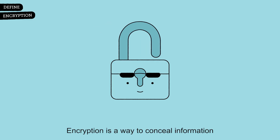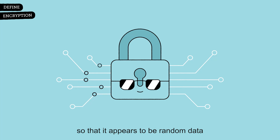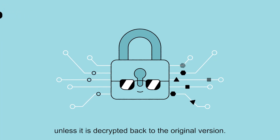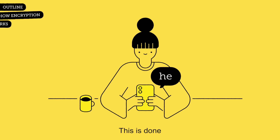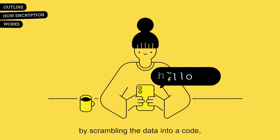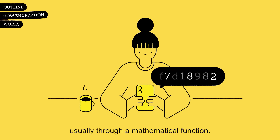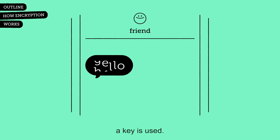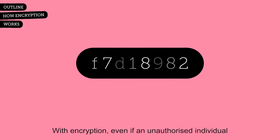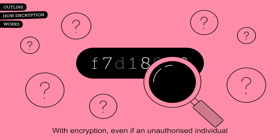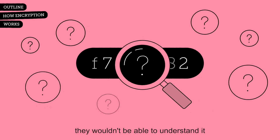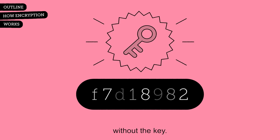Encryption is a way to conceal information so that it appears to be random data unless it is decrypted back to the original version. This is done by scrambling the data into a code, usually through a mathematical function. Then to unscramble the data, a key is used. With encryption, even if an unauthorised individual accessed your data, they wouldn't be able to understand it without the key.